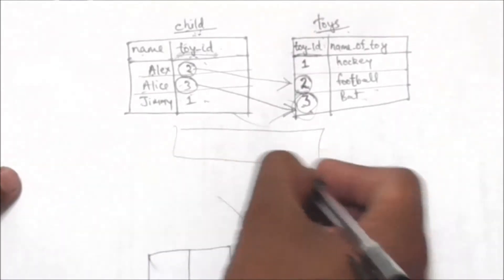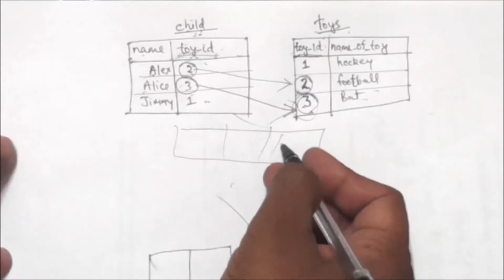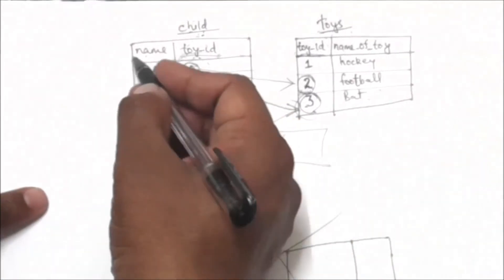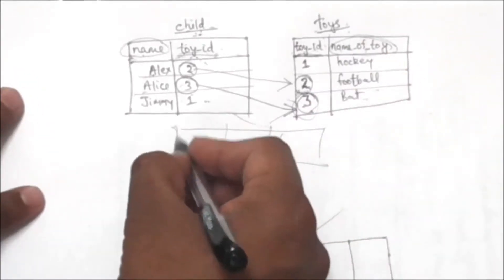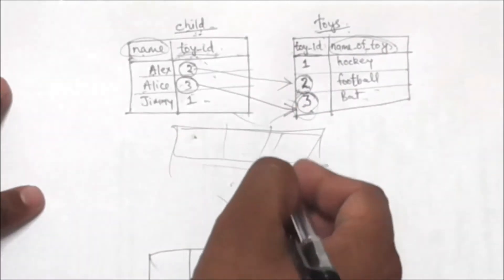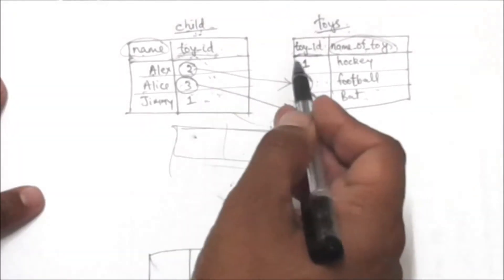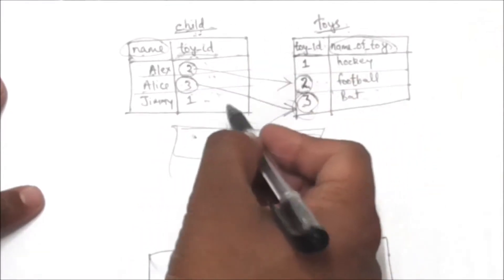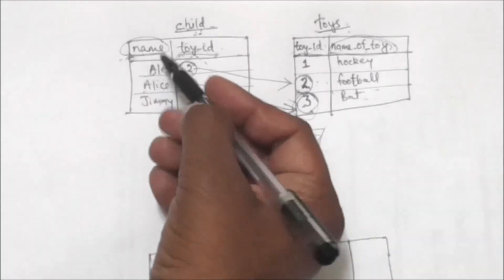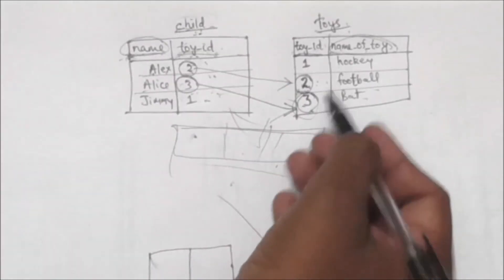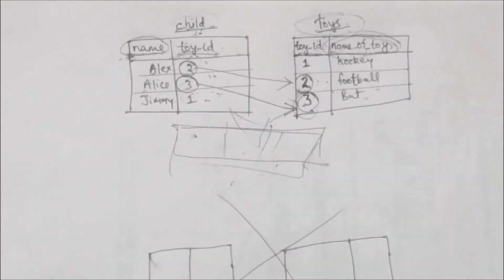After performing natural join I will get a new table. What I want is the column name from the child table and the column name of toy from the toys table, from the table which is formed by performing natural join on these two tables child and toys.